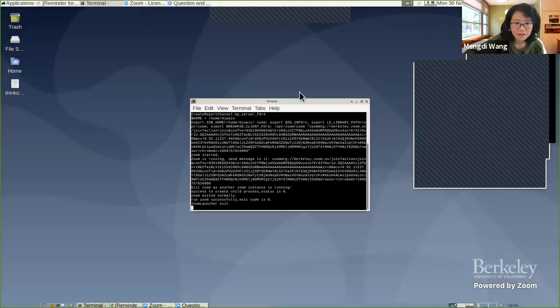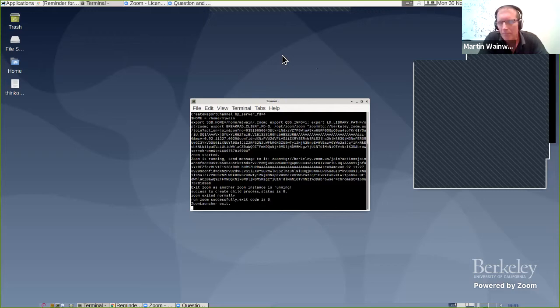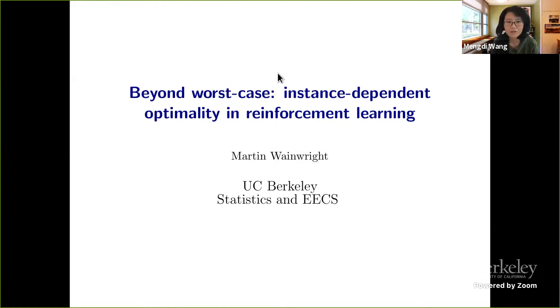Hi Martin, are you there? I'm here, yep. Can you hear me? Yes, perfect. Okay, so Martin is professor of statistics and ECS at UC Berkeley. I don't need to enumerate the long list of awards and titles that Martin has. Many of us learned about high-dimensional statistics and probability from Martin's textbook. Recently Martin has begun to think about statistical theory in reinforcement learning.